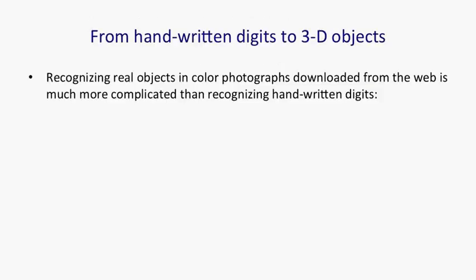People worked on MNIST for many years, gradually improving these networks' ability to recognise handwritten digits. Many computer vision researchers thought this was a waste of time if you wanted to recognise real objects in colour images, because they thought that the lessons learned from MNIST would not generalise to that domain.